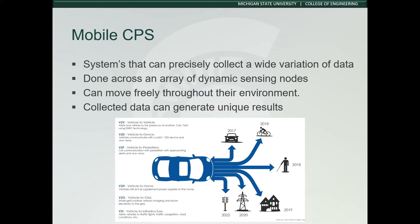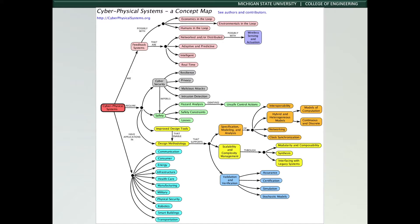Mobile CPS systems can precisely collect a wide variation of data across an array of dynamic nodes. These systems can generate unique results because of their sensors' ability to move freely throughout their environment. Contrary to some people's beliefs, mobile CPS is not a subset of CPS. There are some major differences between them, having unique characteristics to provide application domains which traditional CPS cannot.